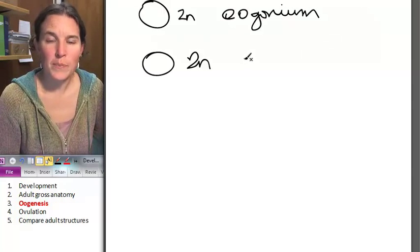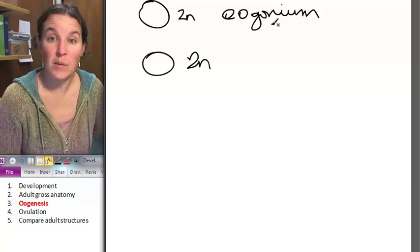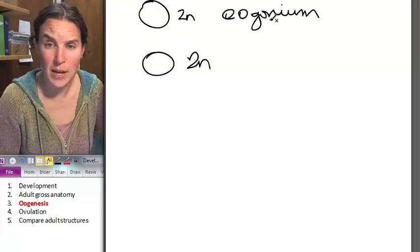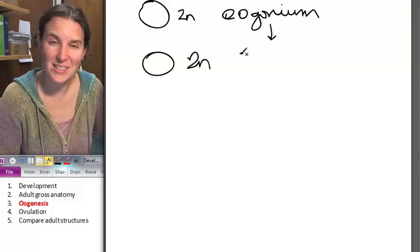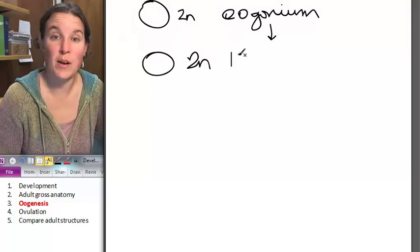The oogonium actually begins the process of, it goes through just like spermatogonium, goes through a single stage of mitosis to produce primary oocytes.